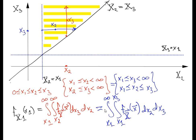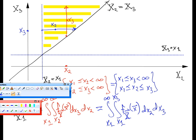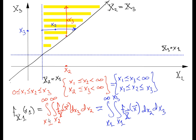That's all there is to it. One last reminder: the range space. We were able to pick any x1 positive, so x1 is greater than or equal to zero. Either integral gives you the marginal density, and that density is valid on the range space. Have a good one.